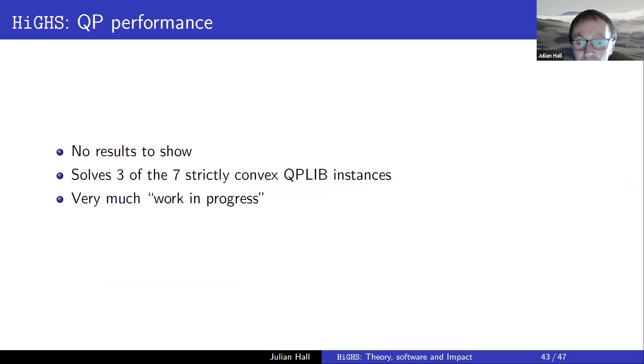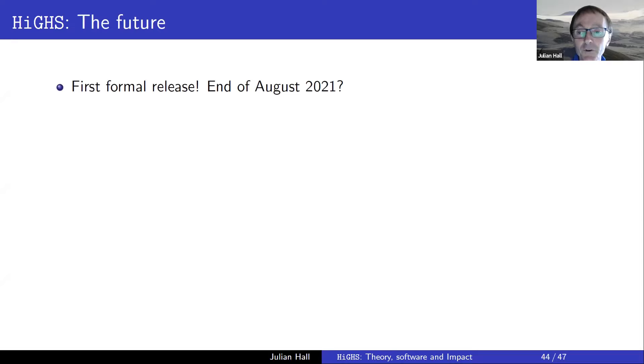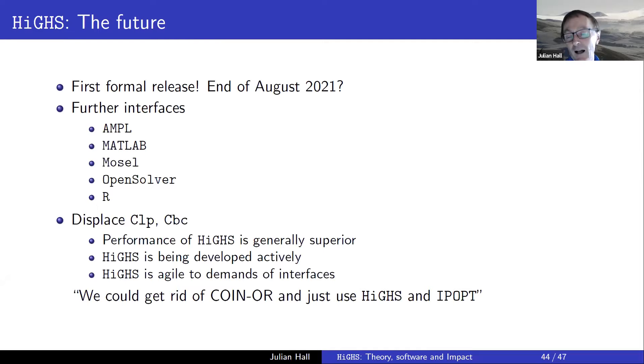The QP solver - I've no results to show you. It does solve three of the seven strictly convex QP-lib instances. It's very much work in progress. It's Michael's PhD. But it's still there. If you just have a small QP to solve, it's good enough. So in the future, we've never had a formal release. We really ought to. It means getting documentation together. We're aiming for the end of this month. We need to put in some more interfaces. I think that in due course we will displace CLP and CBC as the pre-eminent open source LP and MIP solvers.